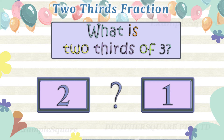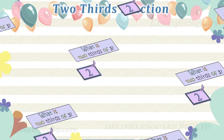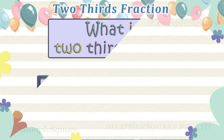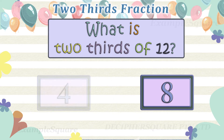What is two-thirds of three? Two-thirds of three is two. What is two-thirds of twelve? Two-thirds of twelve is eight.